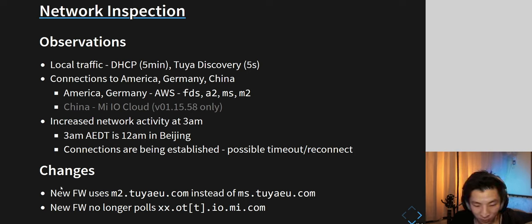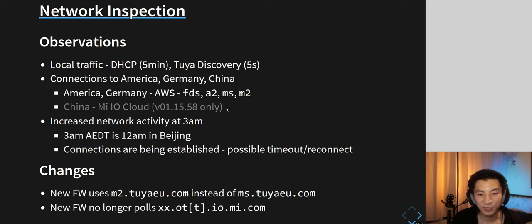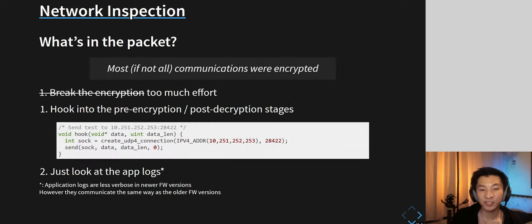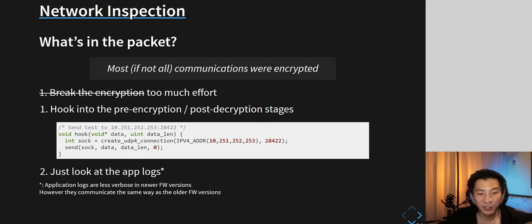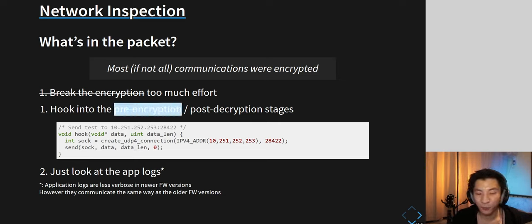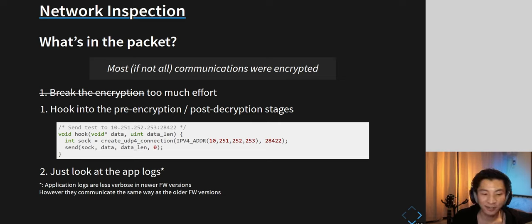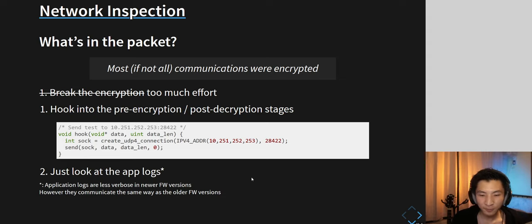The new firmware uses a new endpoint and no longer polls the decommissioned servers, reducing network traffic. Most if not all communications are encrypted, so to actually read the information I created hooking functions that broadcast the information before encryption, compiled them into assembly, and injected them into all the function hooks. I also just looked at the log files directly, since pretty much everything gets logged to text files before being encrypted and uploaded.